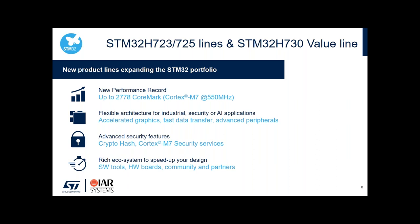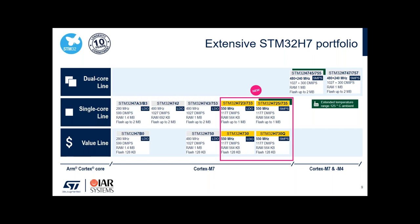The STM32H725, H735, and H730 value line family share the following key pillars. Performance is obviously one — we have a 2,768 CoreMark officially posted on EEMBC.org. We have an advanced interconnect architecture enabling high data exchange between peripherals and memories, advanced security features including crypto/hash acceleration, secure services, and a strong ecosystem.